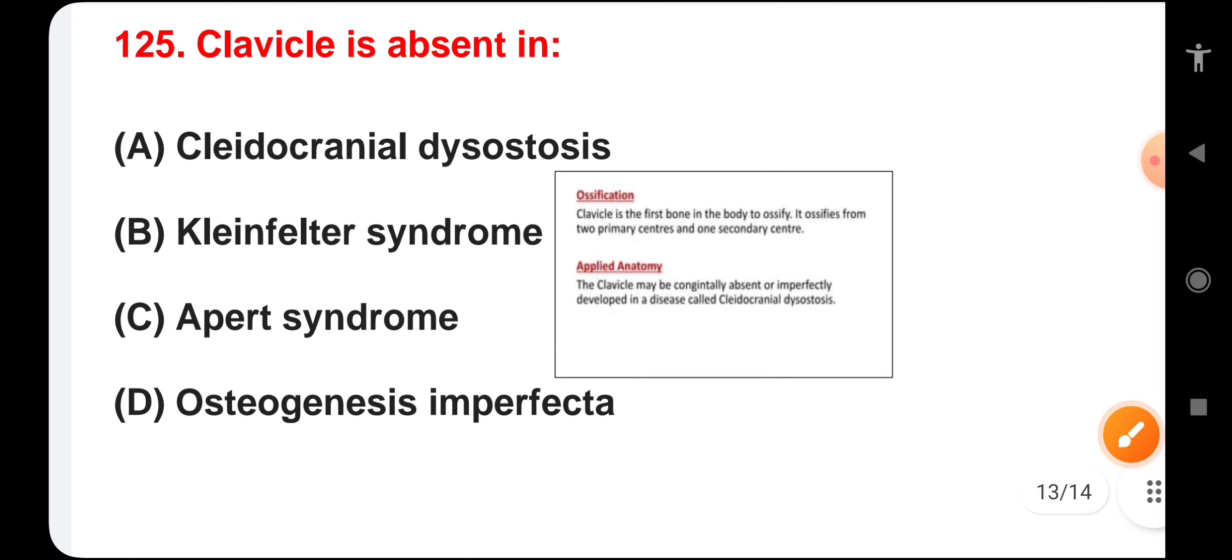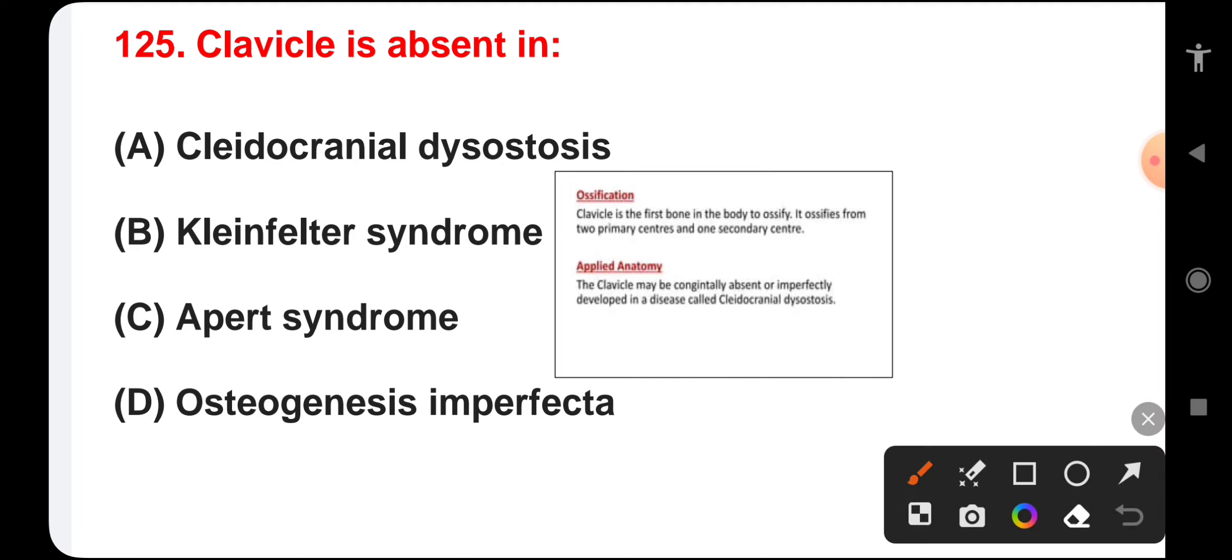Clavicle is absent in cleidocranial dysostosis, Klinefelter syndrome, Apert syndrome, or osteogenesis imperfecta. Clavicle is the first bone in the body to ossify. It ossifies from two primary centers and one secondary center. It is absent in cleidocranial dysostosis. The correct answer is cleidocranial dysostosis.